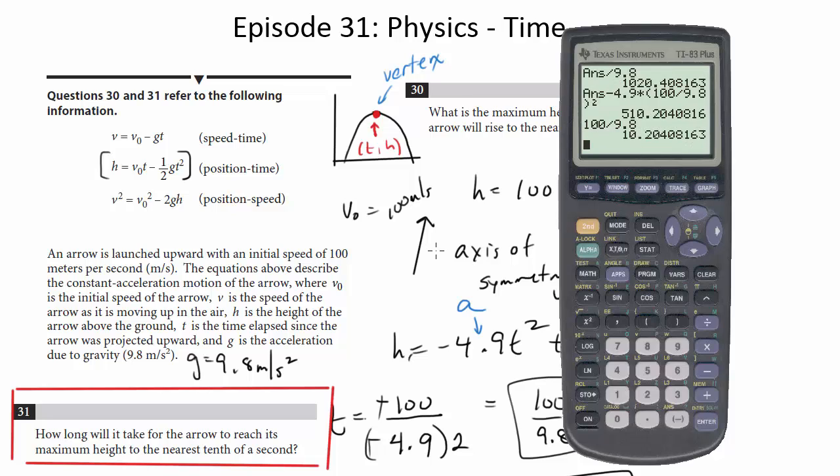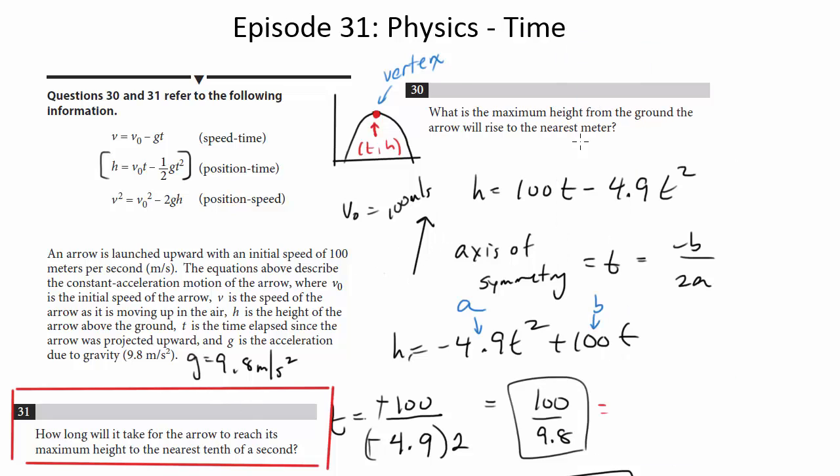And you can look in the previous video, episode 30, to see how we tackled getting the axis of symmetry in the first place. So that gets us 10.2. We want it to the nearest tenth of a second, so that'll just round to 10.2 seconds.